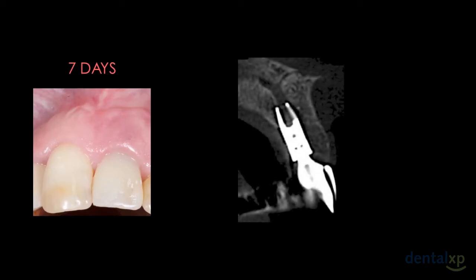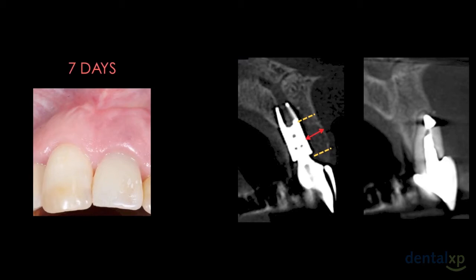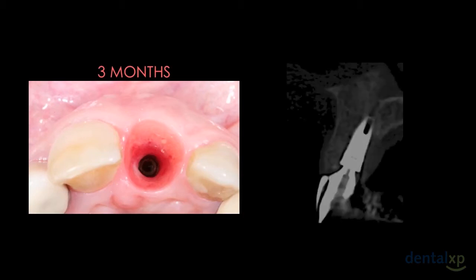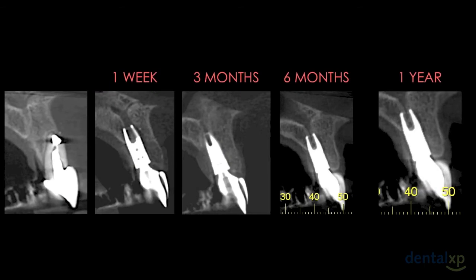Here we have the clinical aspect seven days later. Through CT image we can evaluate the height and width of the buccal bone wall reconstructed and compare it with the initial situation. Three months later we can notice a bigger volume of soft tissue and the beginning of cortical bone remodeling. The cone beam CT sagittal slices show the cortical buccal bone remodeling, which is stable one millimeter above the implant platform.